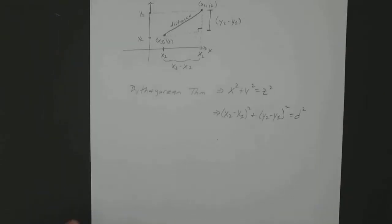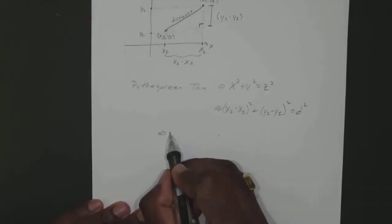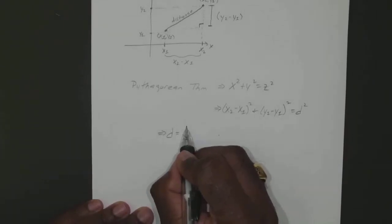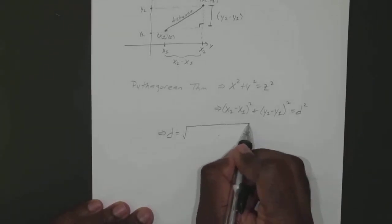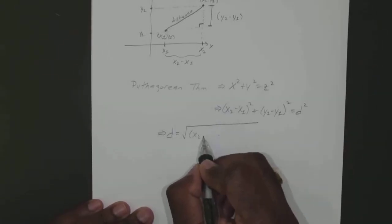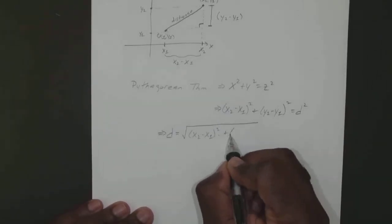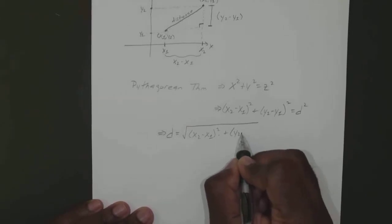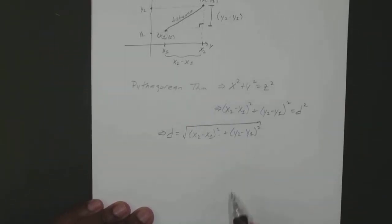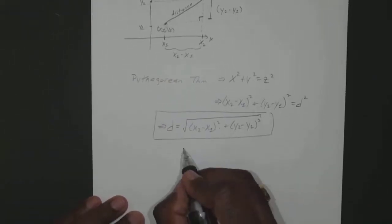So if we square root both sides, we end up with our distance equaling the square root. Of course it has to be positive since you won't have a negative distance: square root of (x2 minus x1) squared plus (y2 minus y1) squared. And this is your distance formula.